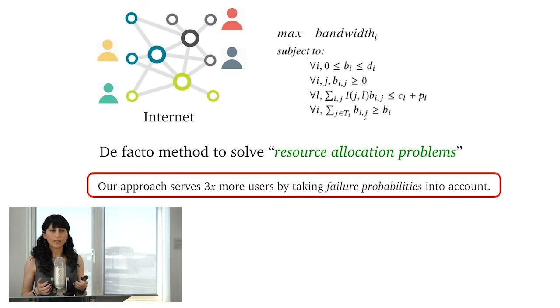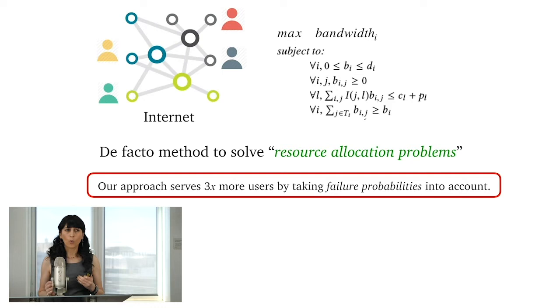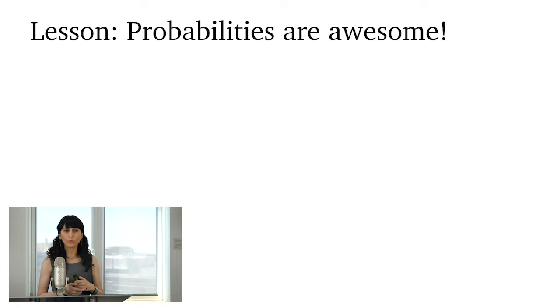But what I'm going to show you is that we can serve three times more users by taking failure probabilities into account. This number three times more users is significant because another way of thinking about it is that we can cut the cost by a factor of three. The main lesson learned in our work is that probabilities are awesome. And we should take probabilities into account when allocating resources in networks like the internet.